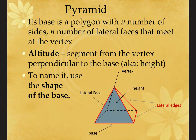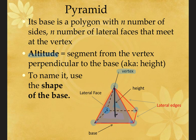A pyramid only has one base. The base is a square here, so this would be a square pyramid or a rectangular pyramid if it were longer than it is wide. The base is a polygon with n sides (three or more), and it has n lateral faces that are all triangular. Those triangular faces all meet at one point called the vertex at the top. The altitude is a segment from the vertex perpendicular to the base. You name it using the shape of the base.